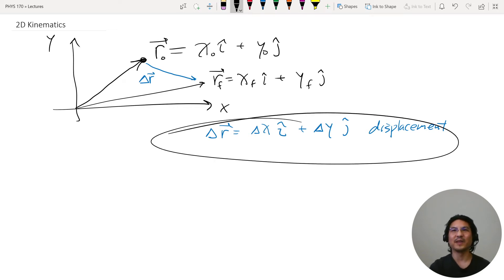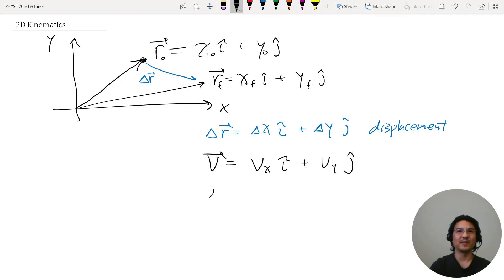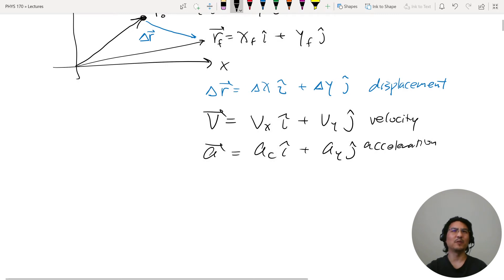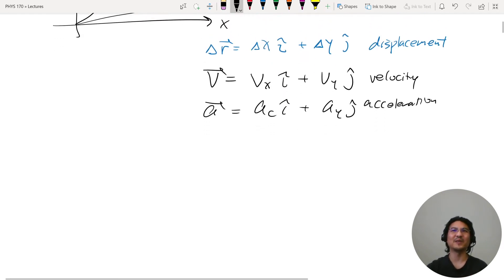So same, like if you take this per unit time, then you can have average velocity and et cetera. Velocity you can split into components, acceleration you can split into components. Okay, and now that we're in two dimensions, I have to mention some vocabulary that would have been out of context in one dimension, but now in two dimensions we have to talk about this.